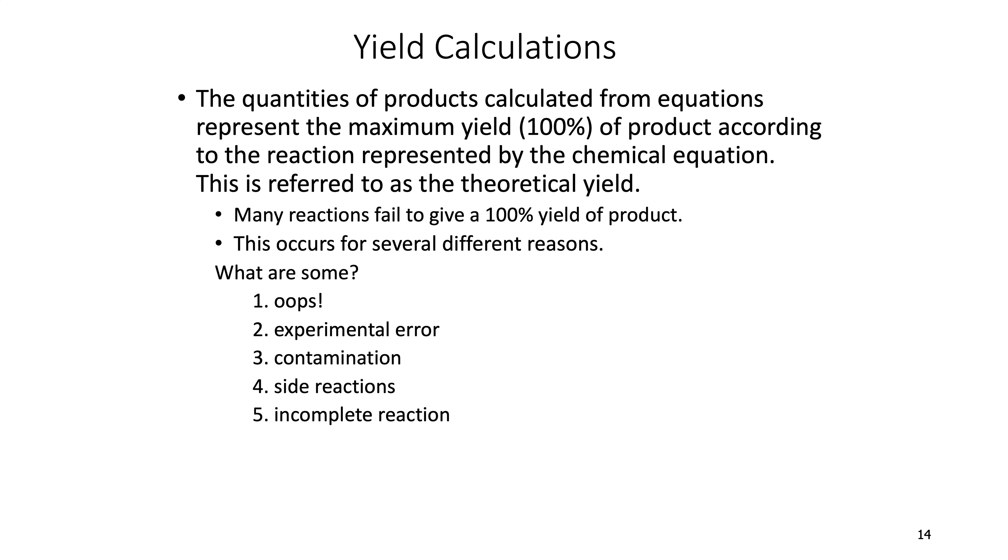And then there's incomplete reaction. This is also called equilibrium. You'll deal with this a lot more in CHEM 201. But equilibrium means the reaction doesn't ever go to completion. So there's a reverse reaction. And that's not actually that unusual. So those are just some reasons why we don't get 100% yield.